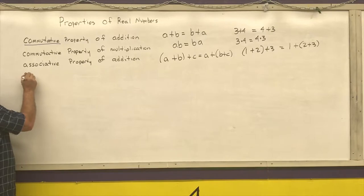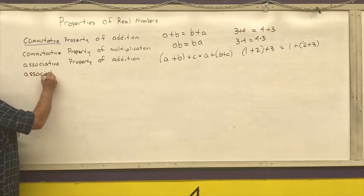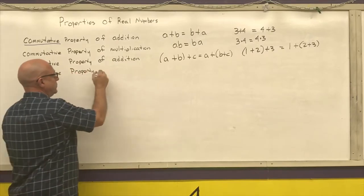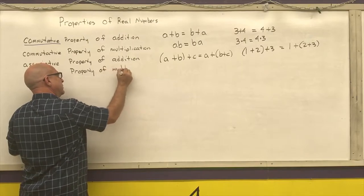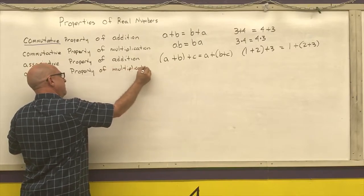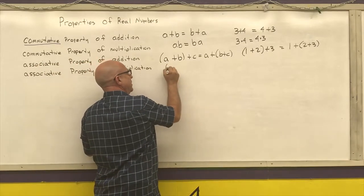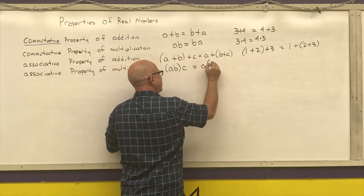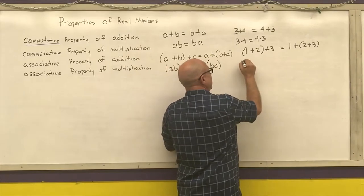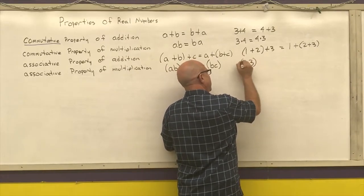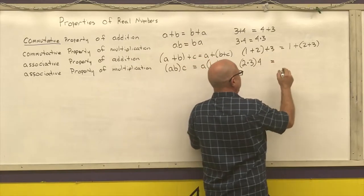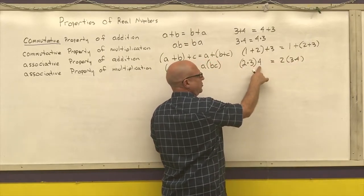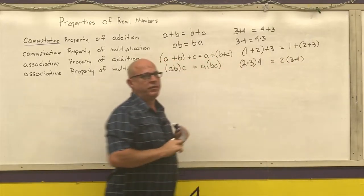I also have the associative property of multiplication, which says that (A times B) times C is the same thing as A times (B times C). For example, (2 times 3) times 4 equals 2 times (3 times 4). 6 times 4 is 24. 2 times 12 is 24.